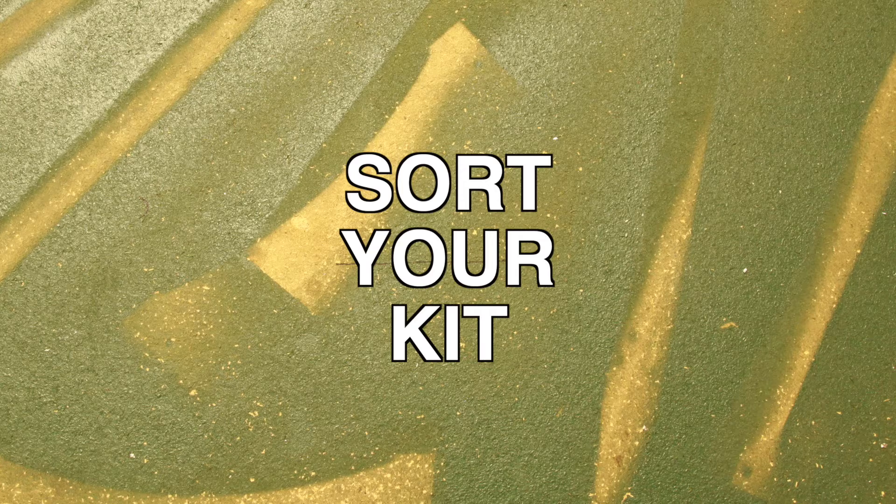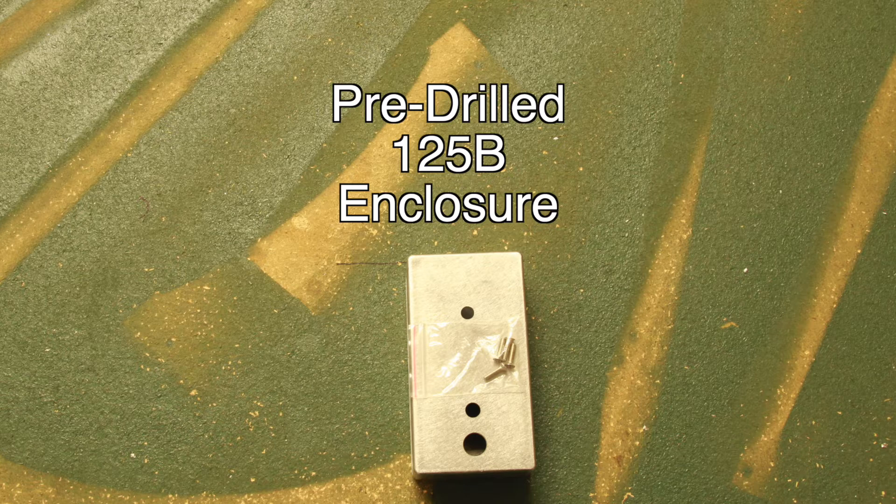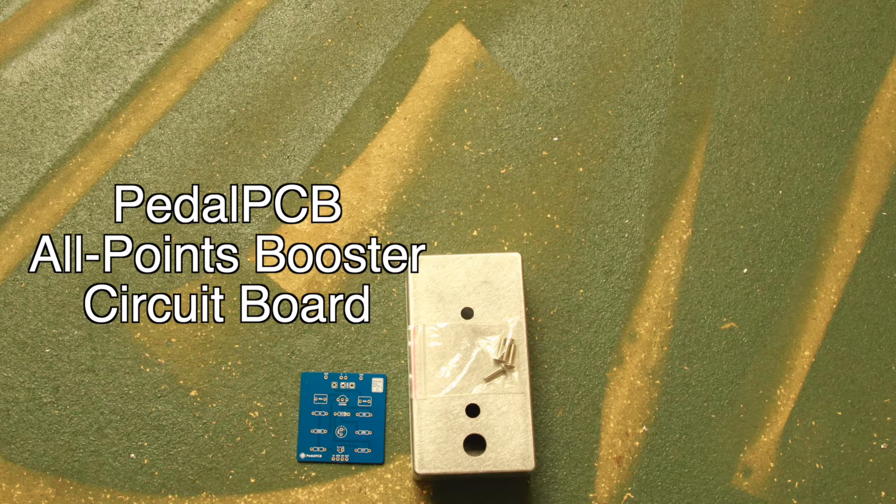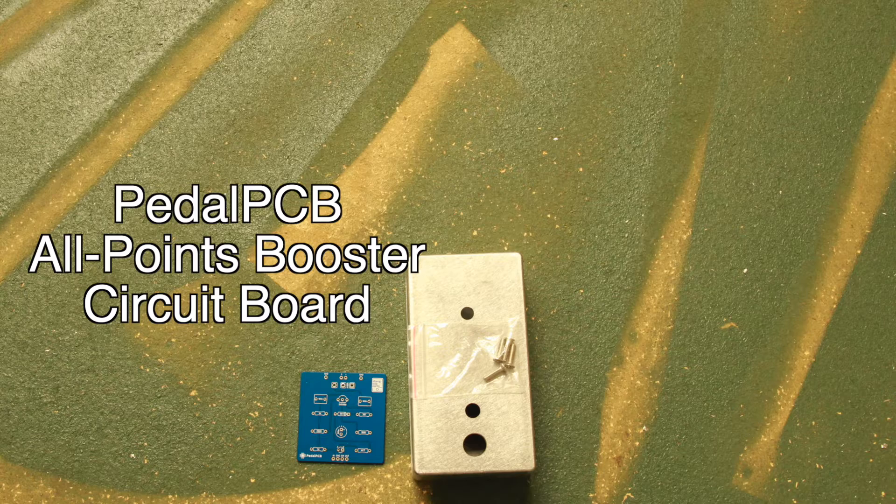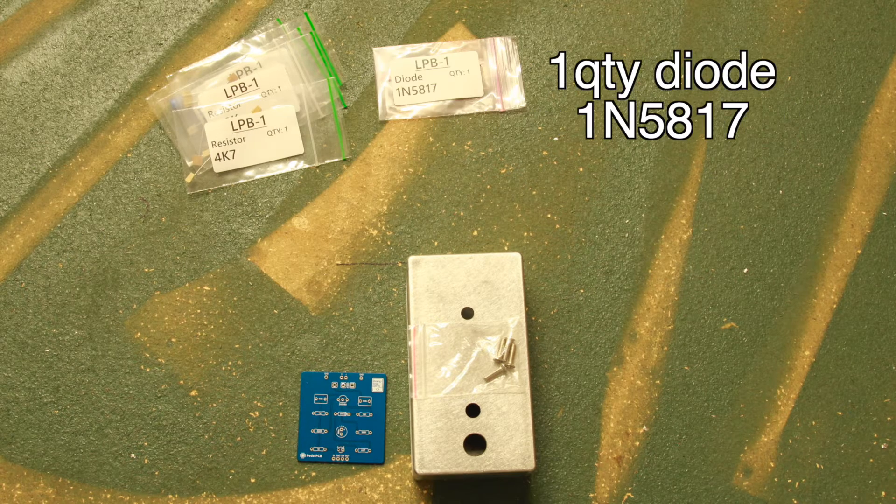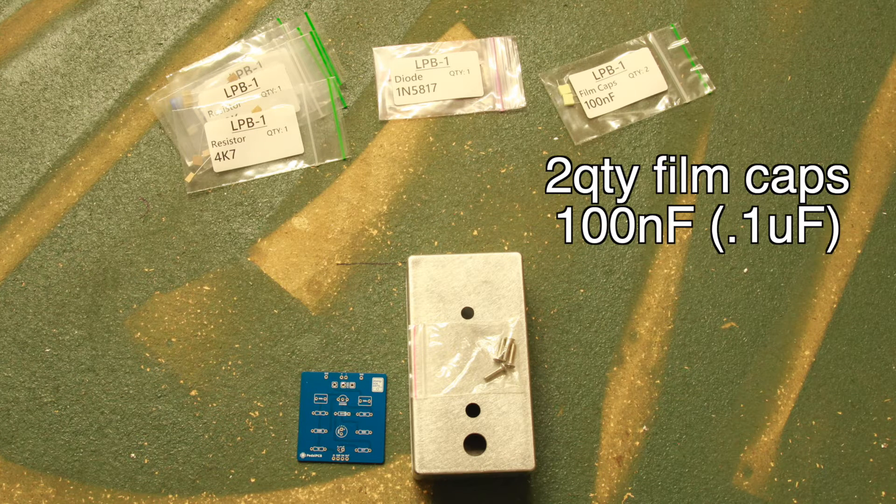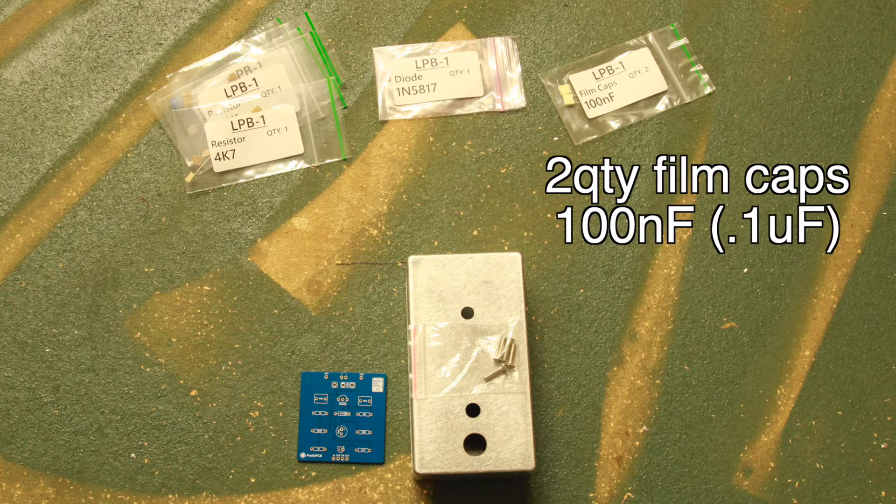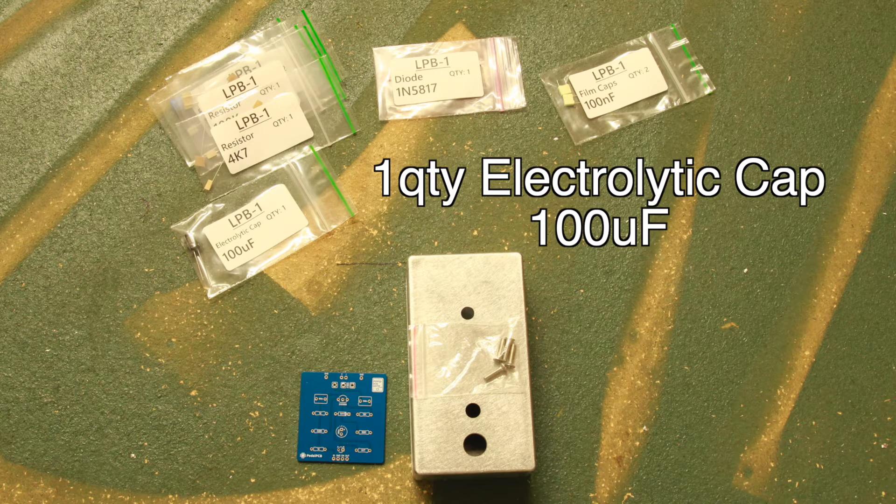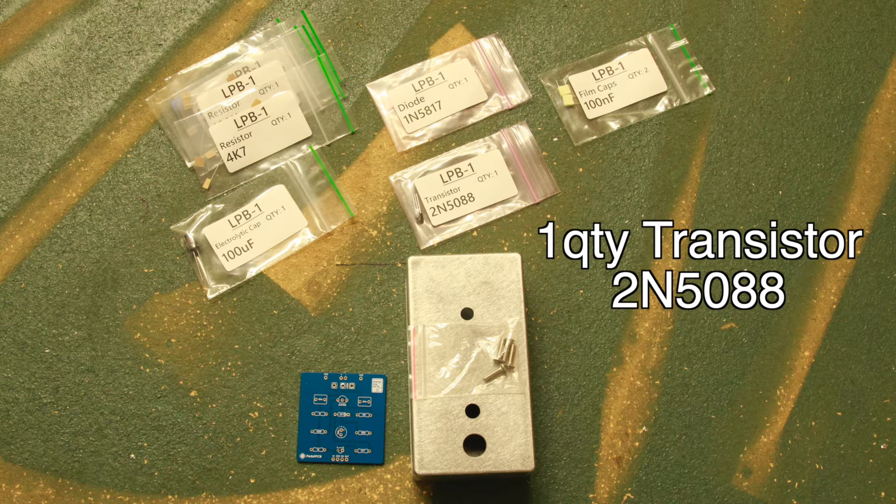Begin by sorting your kit. There should be a pre-drilled 125B enclosure with a pedal PCB APB circuit board. Six resistors in five different values. One 1N5817 diode. Two 100 nanofarad film capacitors. One 100 microfarad electrolytic capacitor. One 2N5088 transistor.